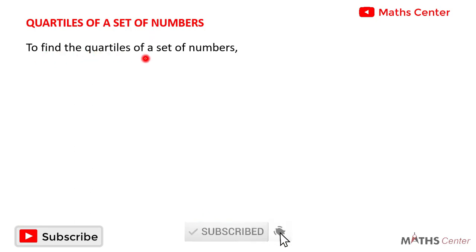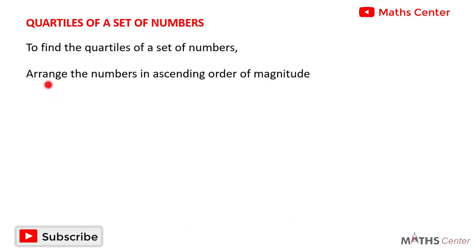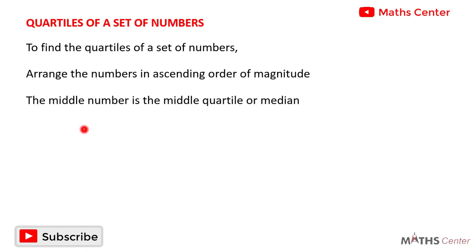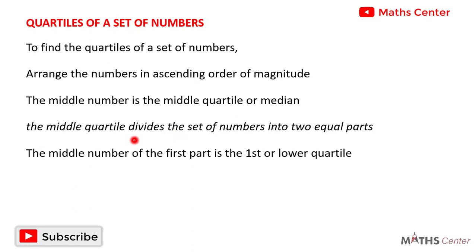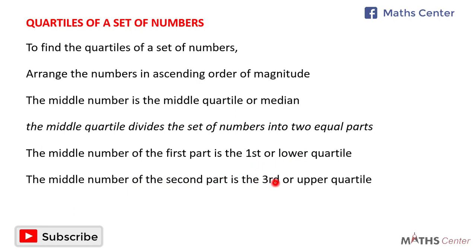To find the quartiles of a set of numbers, first arrange the numbers in ascending order of magnitude, that is from the smallest to the highest. After that, find the middle number of the set of numbers. The middle number will give you the middle quartile or the median. After finding the middle number, it divides the set into two equal parts. The middle number of the first part gives the first or lower quartile, and the middle number of the second part gives the third or upper quartile.